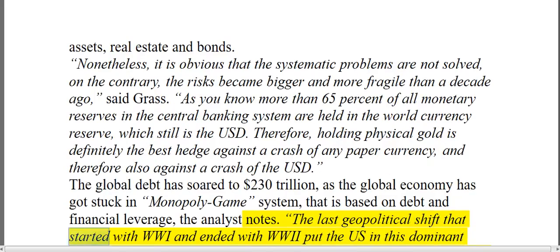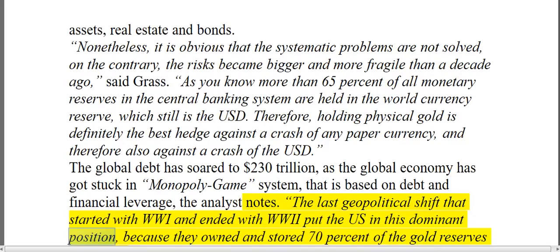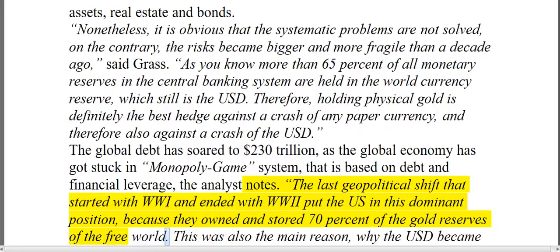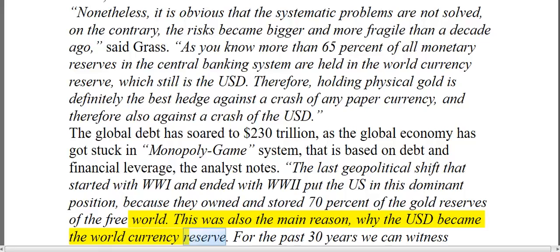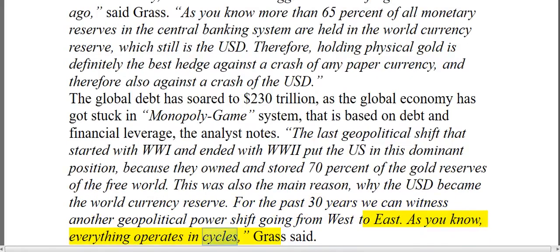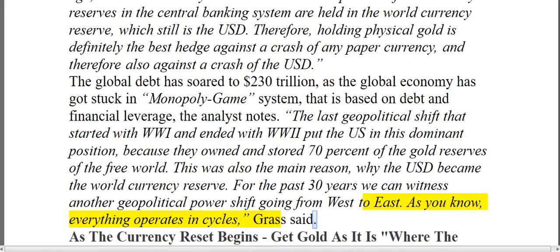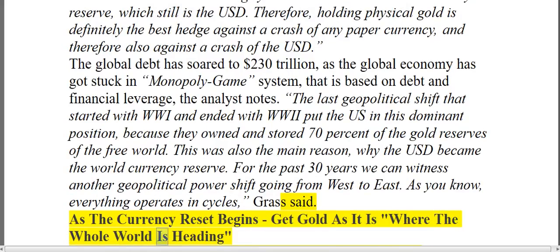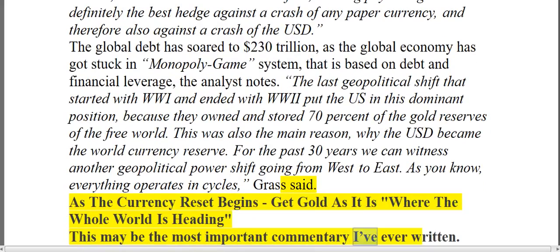The last geopolitical shift that started with World War I and ended with World War II put the US in this dominant position because they owned and stored 70% of the gold reserves of the free world — this was also the main reason why the US became the world currency reserve. For the past 30 years we can witness another geopolitical power shift going from west to east. As the currency reset begins, get gold as it is where the whole world is heading.